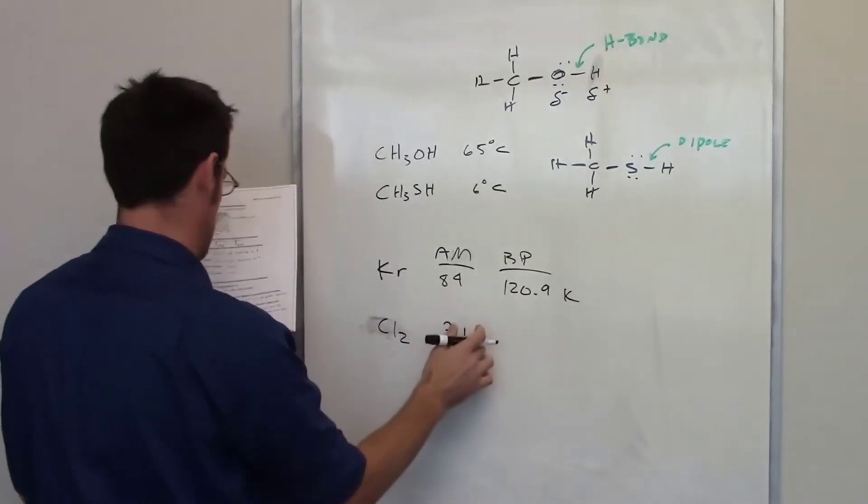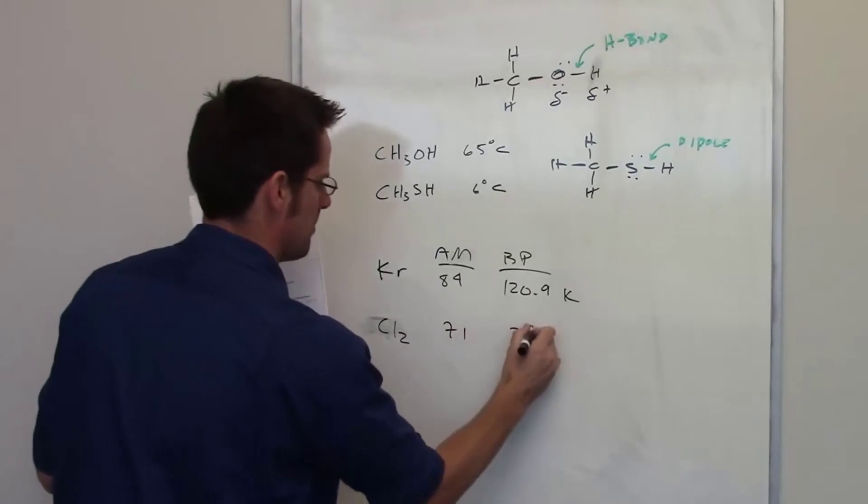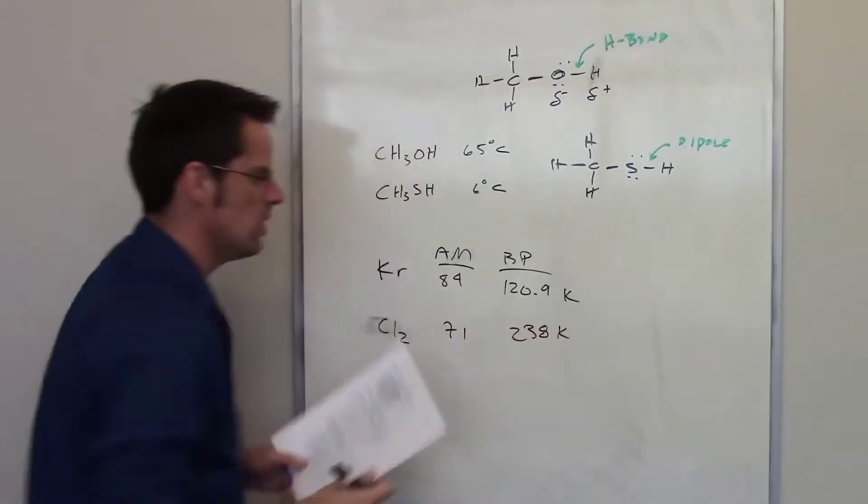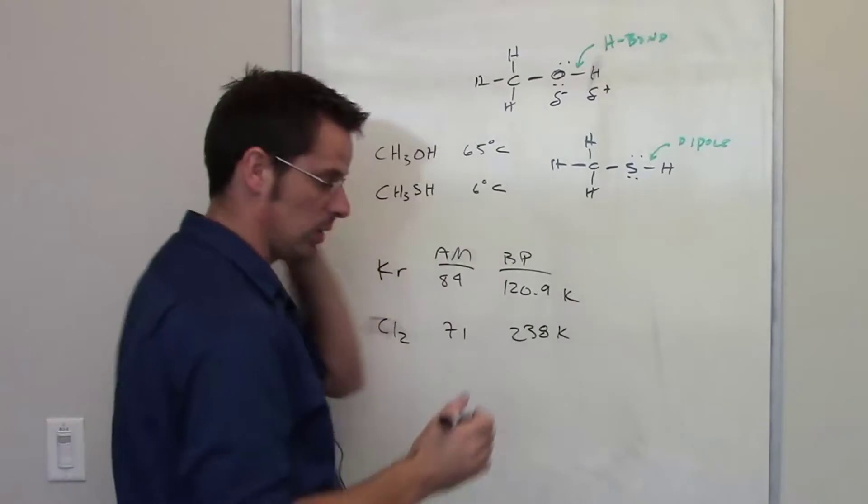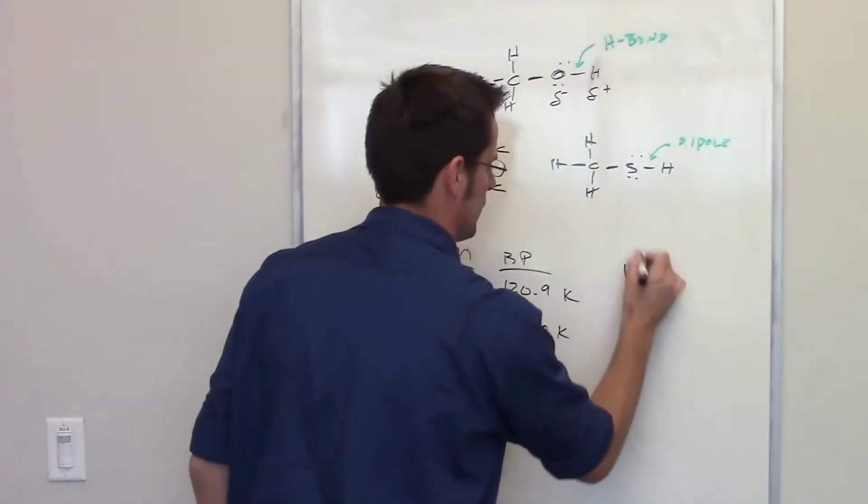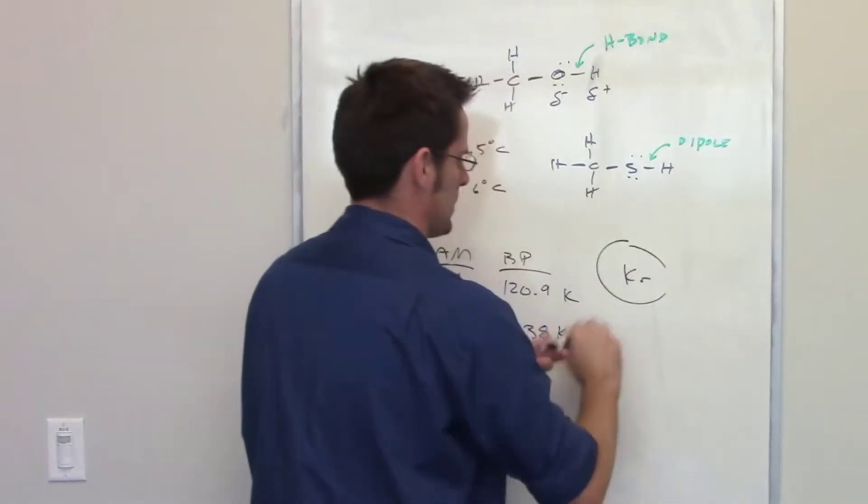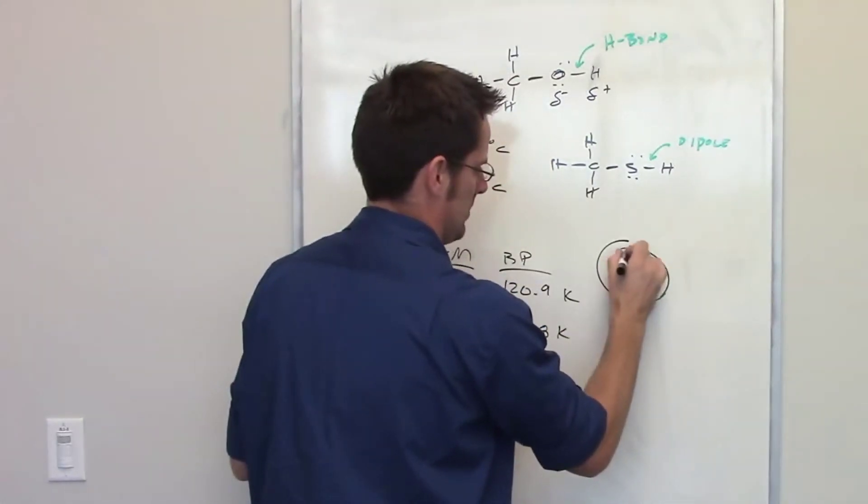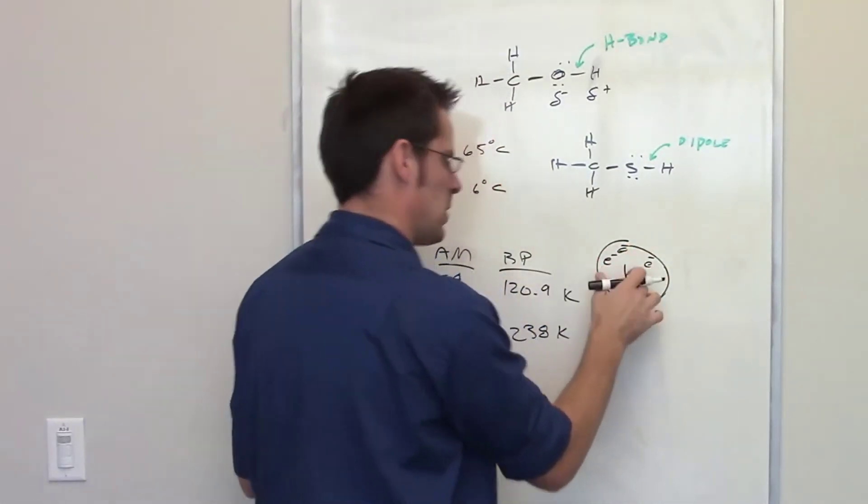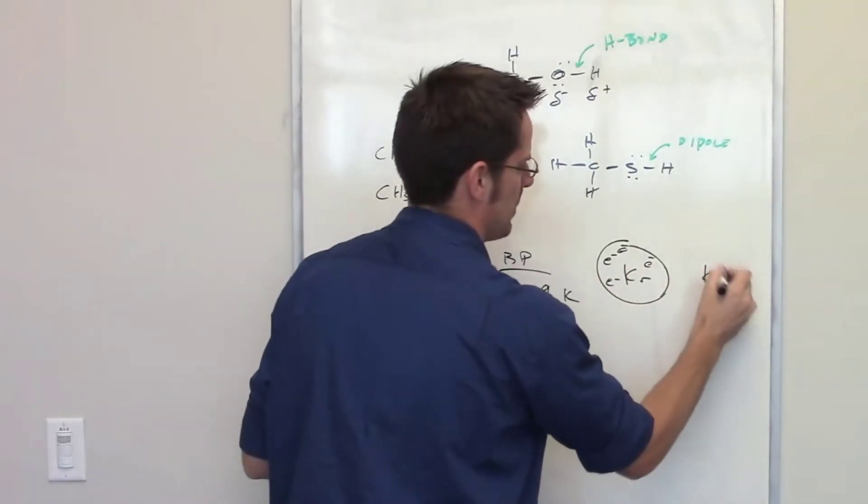What accounts for that? Here's what accounts for it: krypton—as you have a bunch of atoms of krypton floating around, you can imagine krypton of course having all of its electrons zooming around in its orbitals. The protons are in the nucleus as that approaches another molecule of krypton.